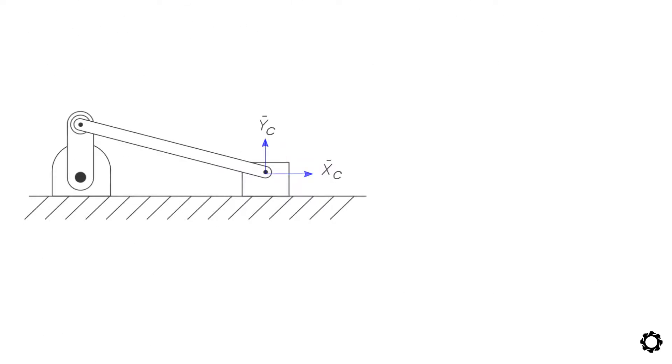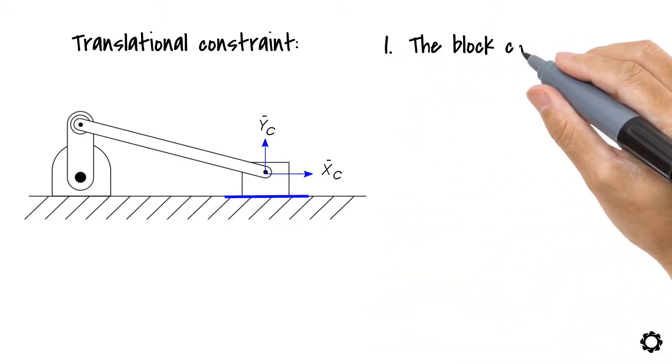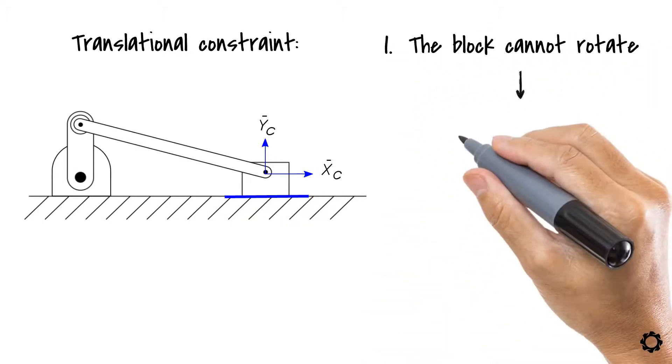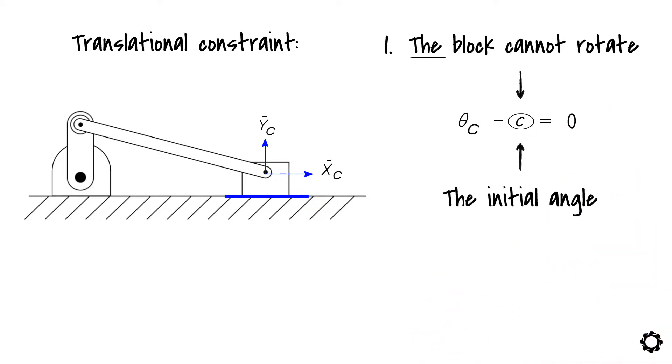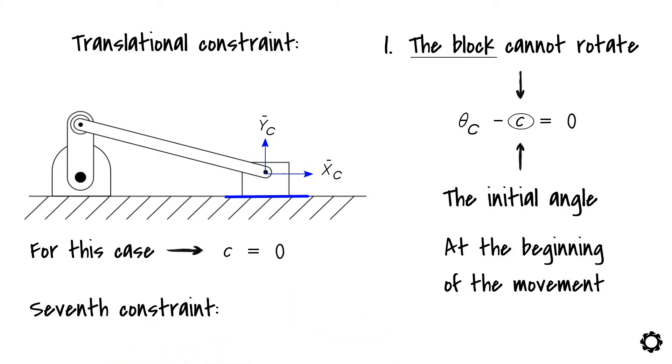Finally, we have our translational constraint, the joint between the block and the ground. First, you know that the block cannot rotate. This means that theta C minus C equals zero, where C is a constant indicating the initial angle of the block at the beginning of the movement. We can say that for this case, this initial angle is zero. Then our seventh constraint will be C7 is theta C equals zero.